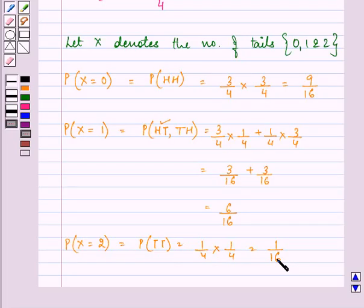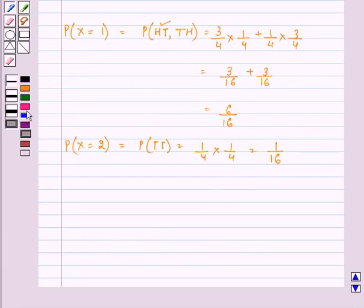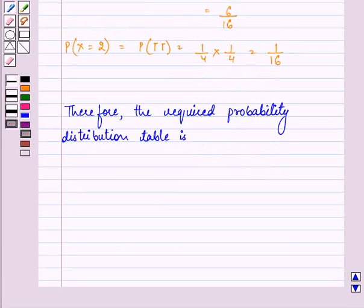Therefore, the required probability distribution table is when X is zero, then probability of X comes out to be nine by sixteen. When X is one, then the answer is three by eight, after simplification. When X is two, the probability is one by sixteen, that means tail is coming twice.